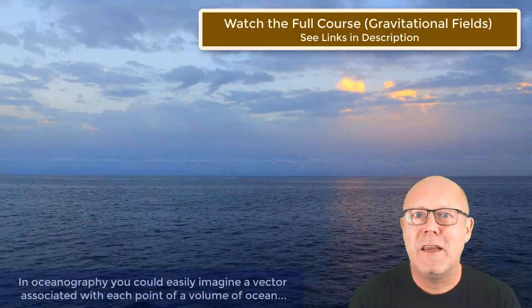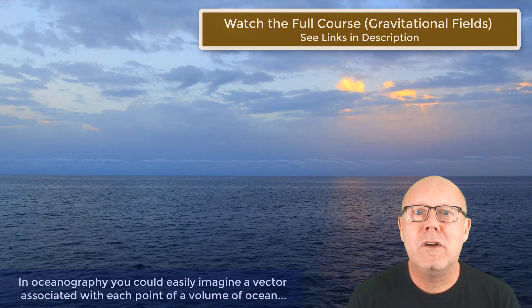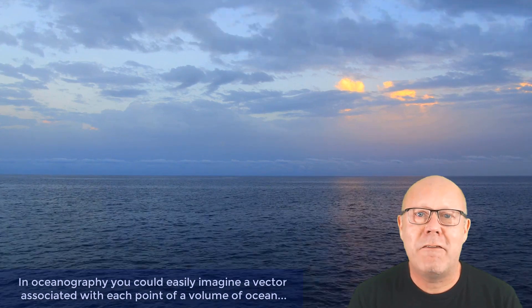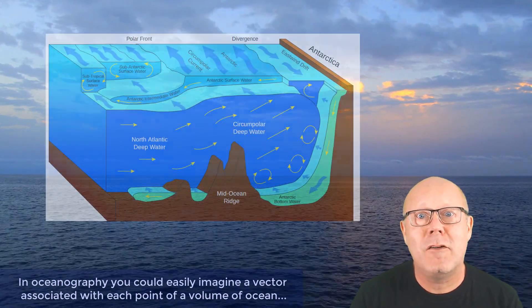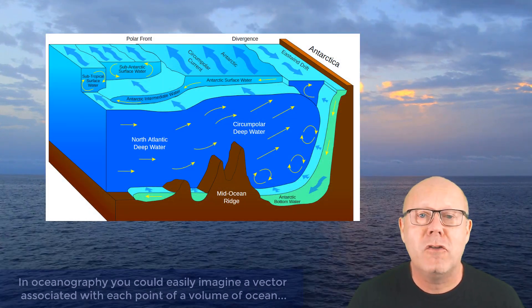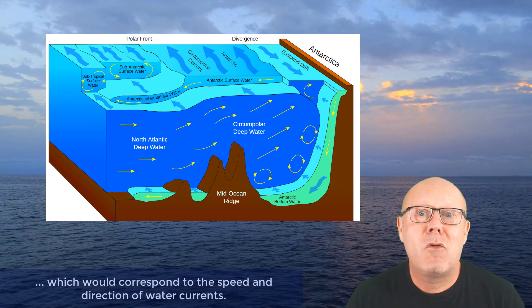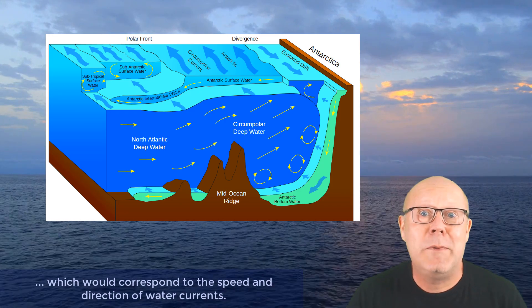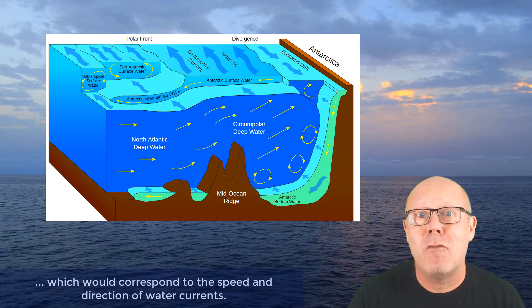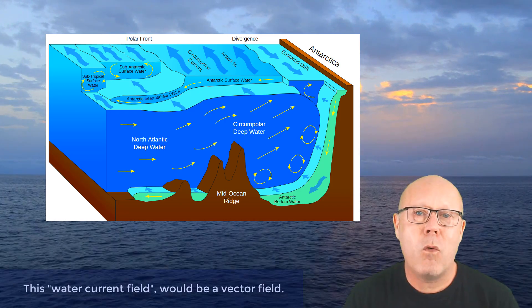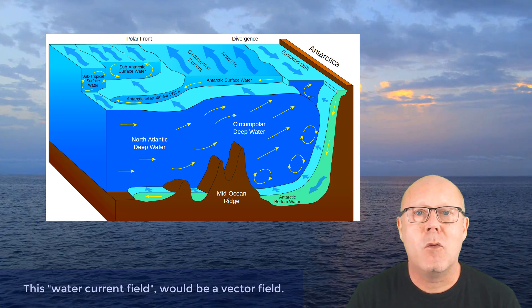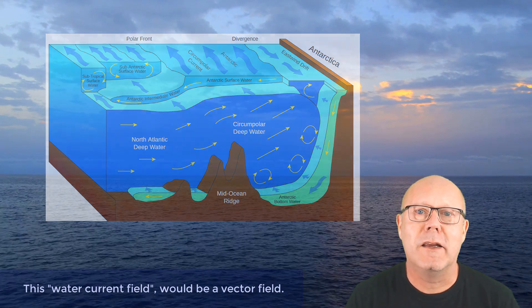In oceanography, you could easily imagine a vector associated with each point of a volume of ocean, which would correspond to the speed and direction of water currents. This water current field would be a vector field.